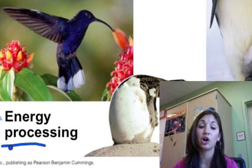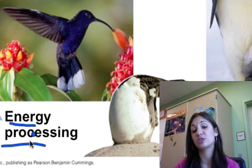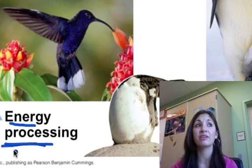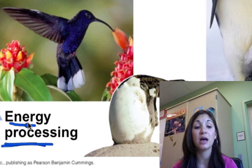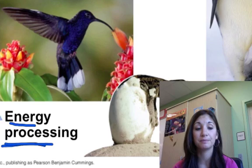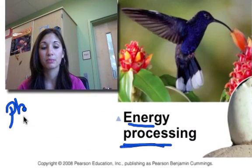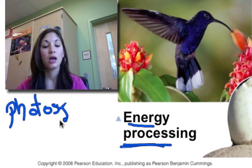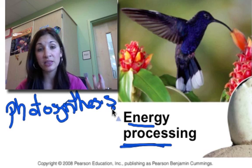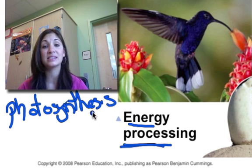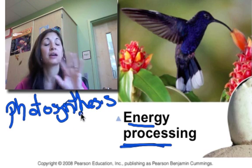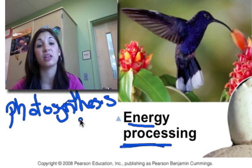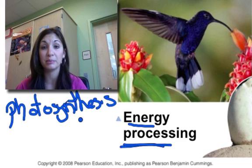Energy processing — energy flows. There are two aspects of energy processing we'll discuss in this course, and all living things must engage in one or the other or both. The first is photosynthesis: taking the sun's energy, harnessing it in the chloroplast in green plants and some bacteria, and converting that solar energy into chemical energy in the form of glucose and simple sugars. That is photosynthesis.